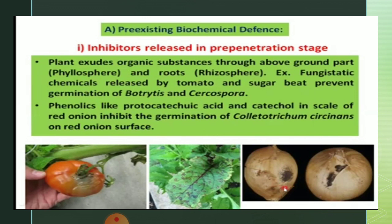Pre-existing biochemical defense: inhibitors released in the pre-penetration stage. Plants exude organic substances through above-ground parts, that is the phyllosphere, and roots, that is the rhizosphere. For example, fungistatic chemicals released by tomato and sugar beet prevent germination of Botrytis and Cercospora.